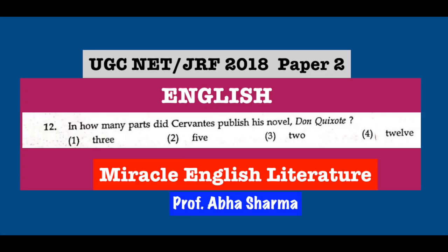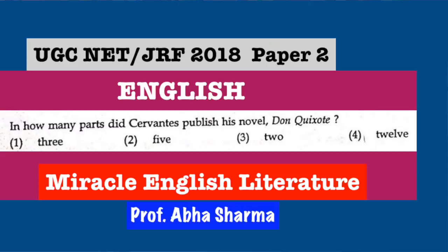Question number 12: In how many parts did Cervantes publish his novel Don Quixote? Cervantes was a Spanish writer, and Don Quixote is a very famous classic from him. The answer is two parts, and both parts were published over a period of ten years — 1605 to 1615.